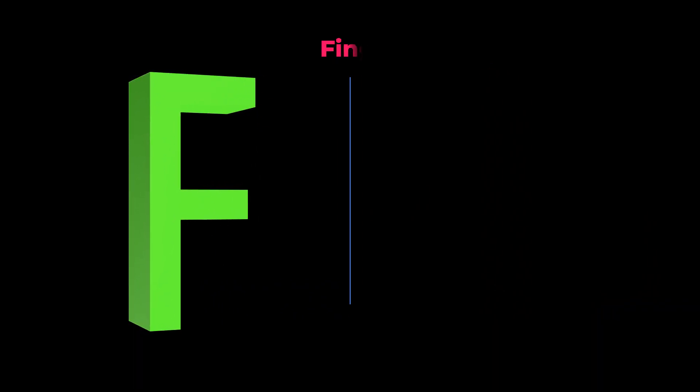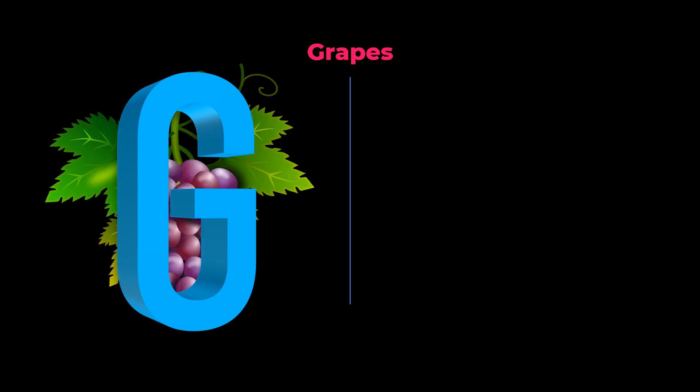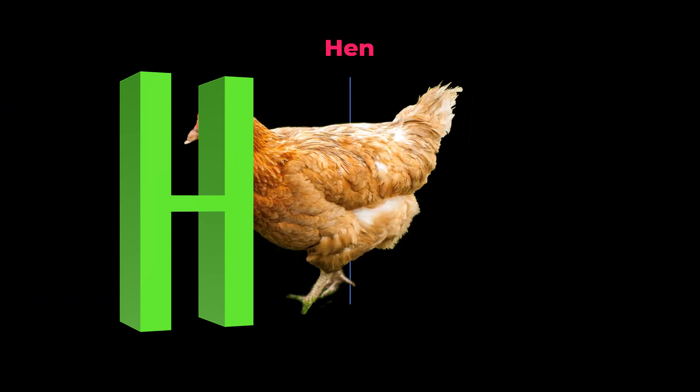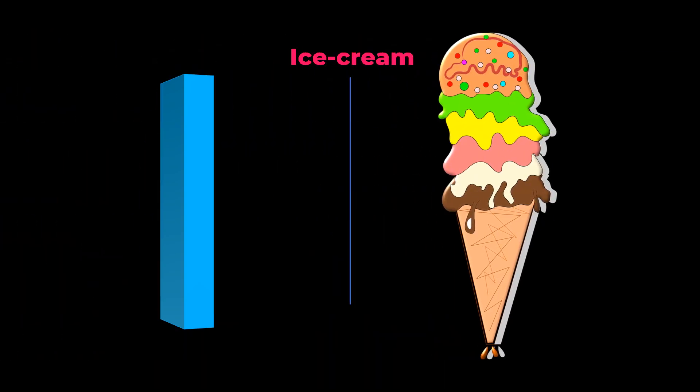F for Finger. G for Grapes. H for Hen. I for Ice Cream. J for Juggler.